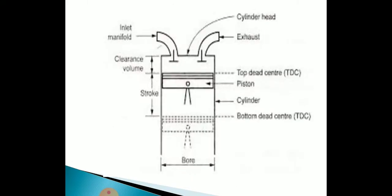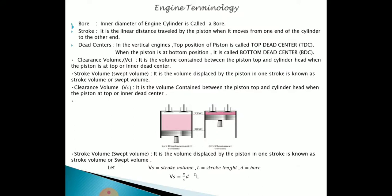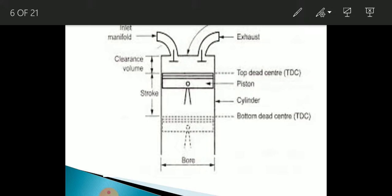Now let us go through some engine terminologies. When we deal with IC engines, there are terms you should understand, such as intake manifold, cylinder head, exhaust, clearance volume, stroke, bore, bottom dead center, and top dead center. Bore is the diameter of the engine cylinder. As you can see in the diagram, the bore is the diameter of the cylinder.